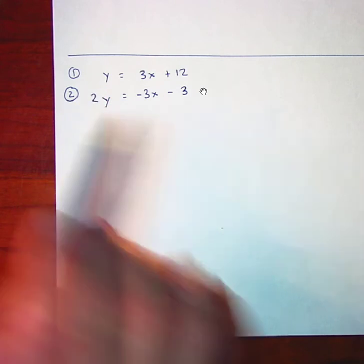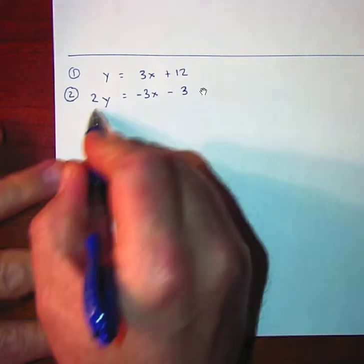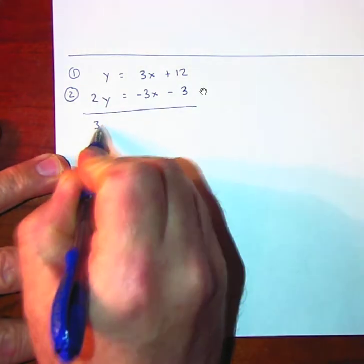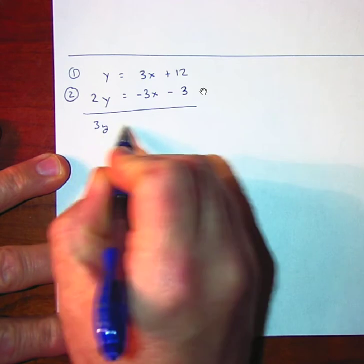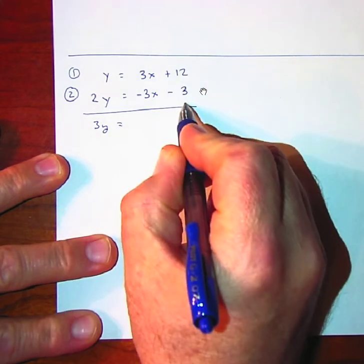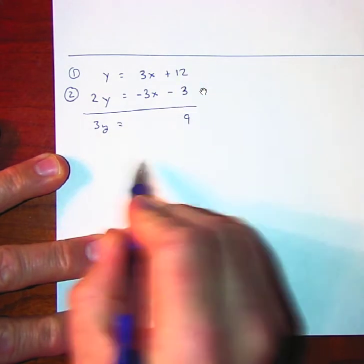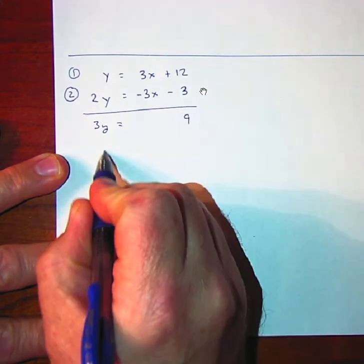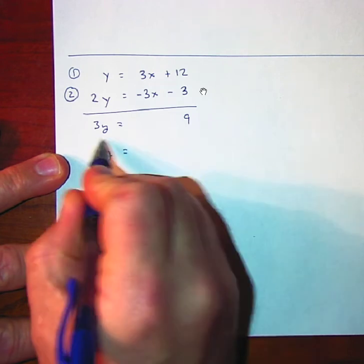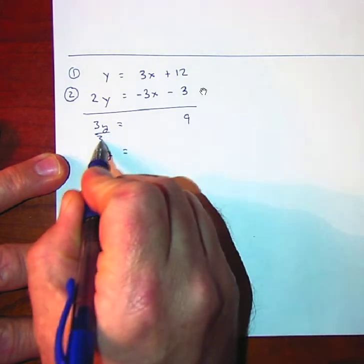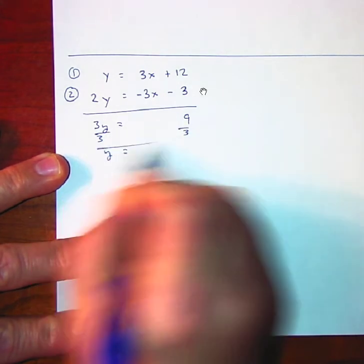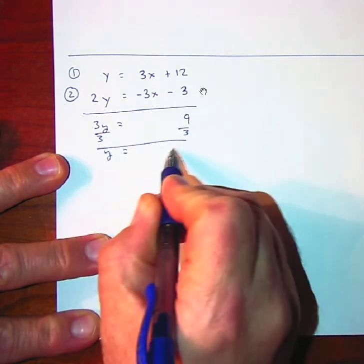You'd be left with 3y is equal to 9. And of course, if you divide both sides by 3, you end up with y is equal to 3.